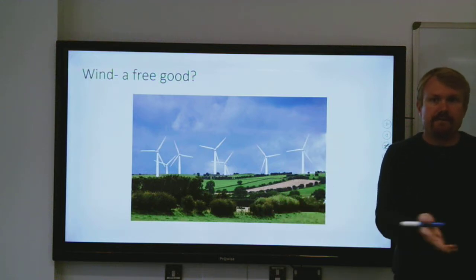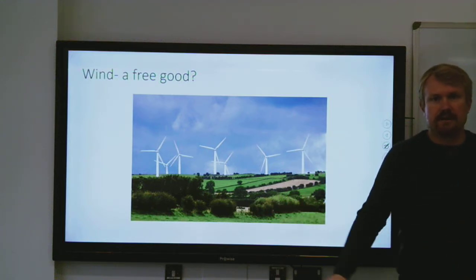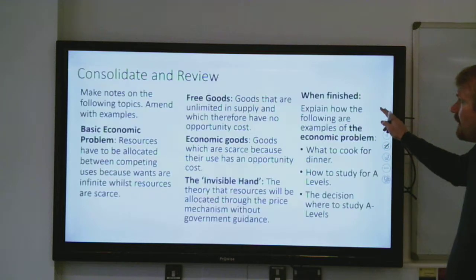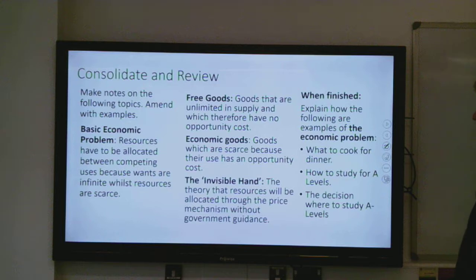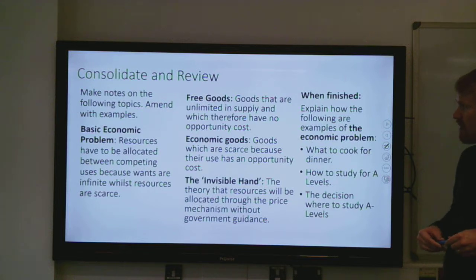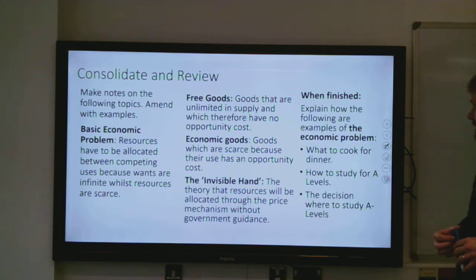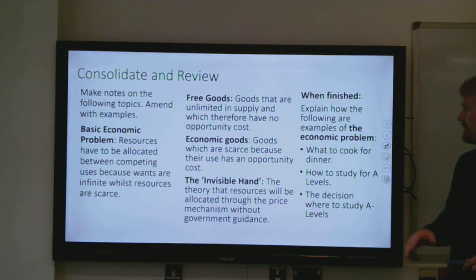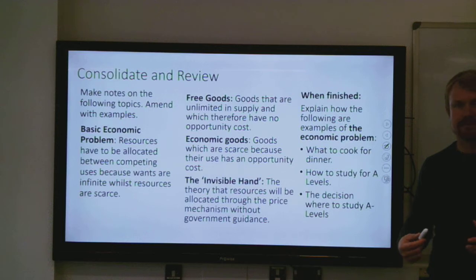Now's a good time to pause, consolidate, and review. Can you understand what is meant by: the basic economic problem, free goods, economic goods, and the invisible hand? These are just some examples you can look at with the economic problem to say, how well do I understand this — putting these sorts of choices into a context which looks similar to the economic problem.